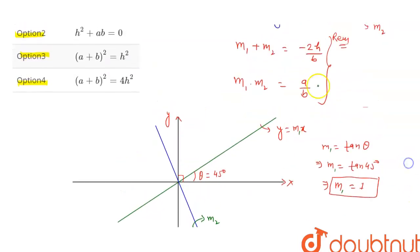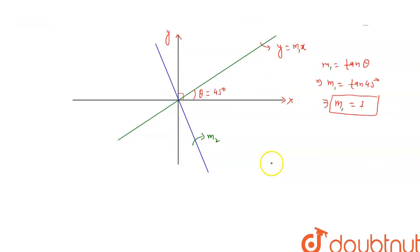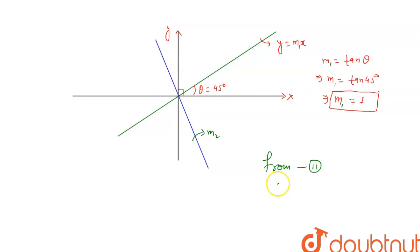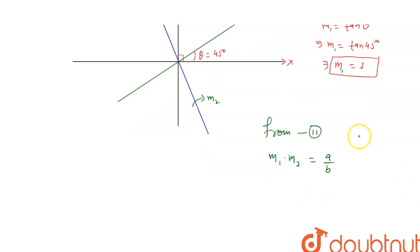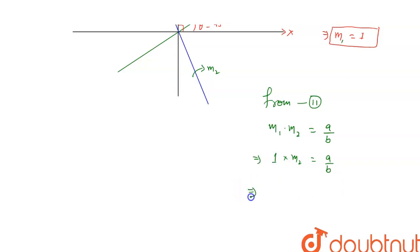Let's say this is equation (1) and this is equation (2). Then from equation (2), we know m₁ × m₂ = a/b. We know m₁ is 1, so m₂ = a/b only.